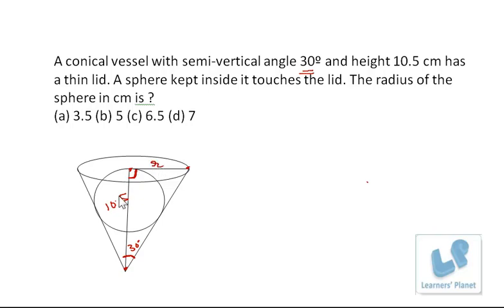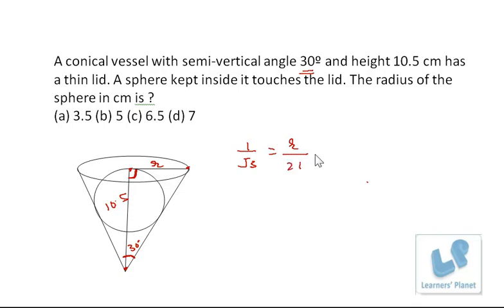Now, the relationship between R and 10.5: this is perpendicular and this is base, so the relationship between them is given by tan θ. Here θ is 30 degrees, so tan 30° = 1/√3 = R/10.5, which can be written as R/（21/2）. That gives us R = 21/(2√3). So this length is 21/(2√3).